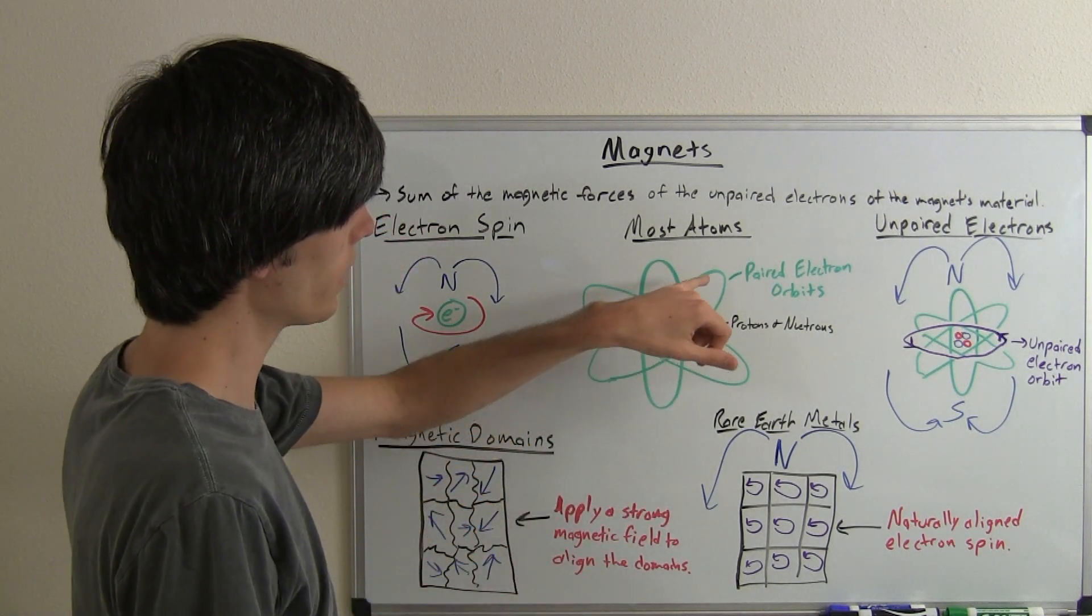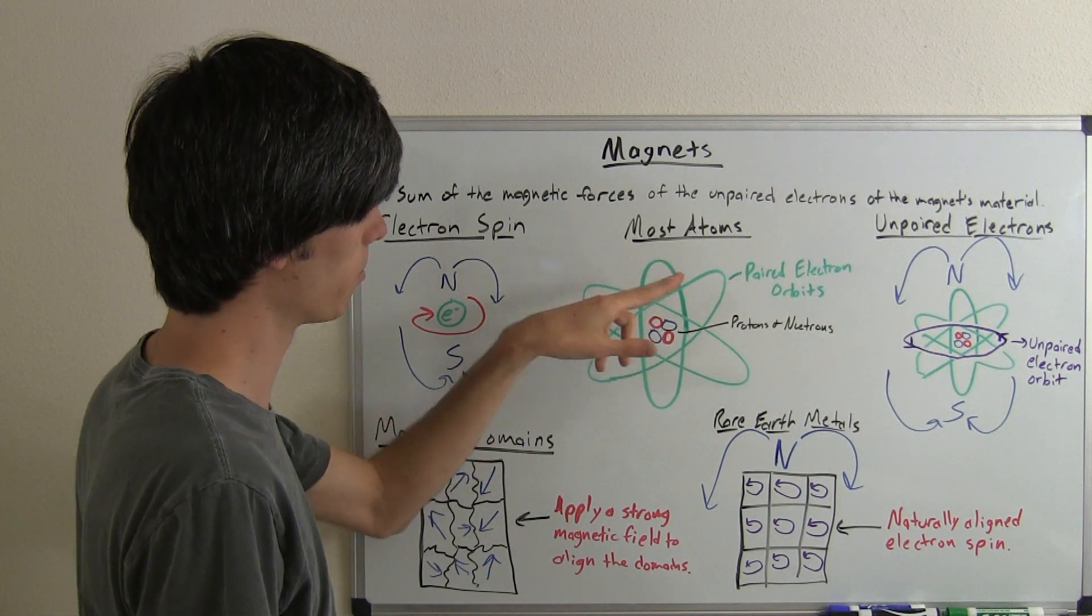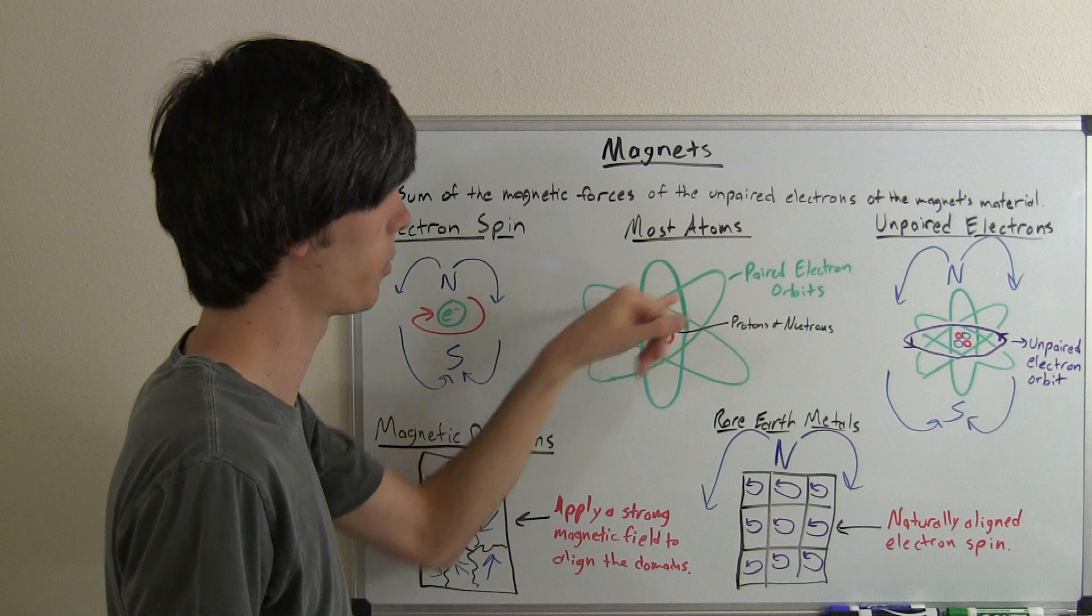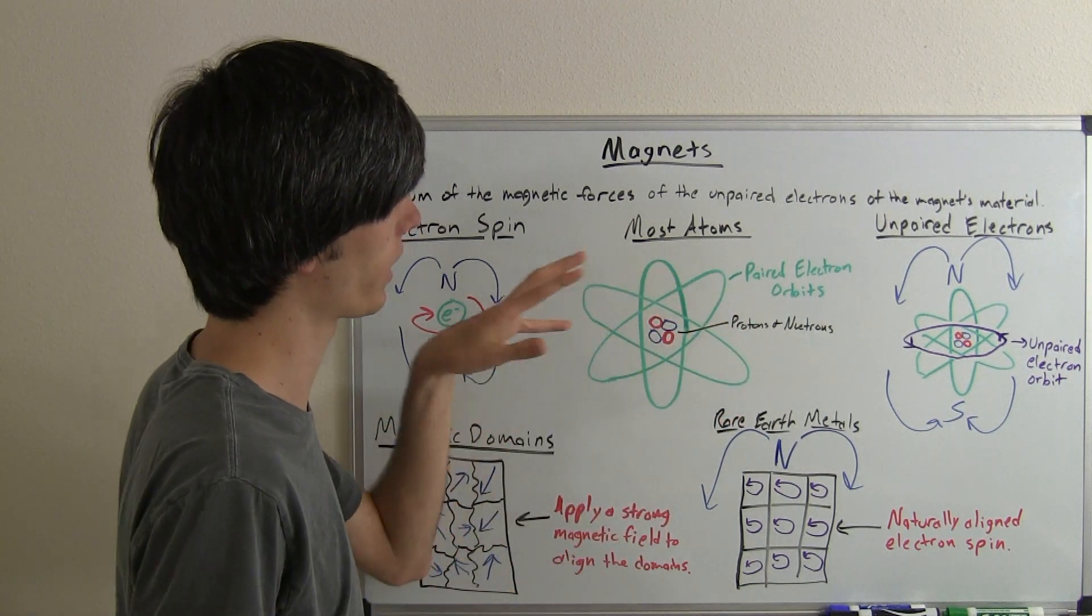So these paired electron orbits have two electrons and both of these electrons have opposite spin. So because they have opposite spin they produce no magnetic field.